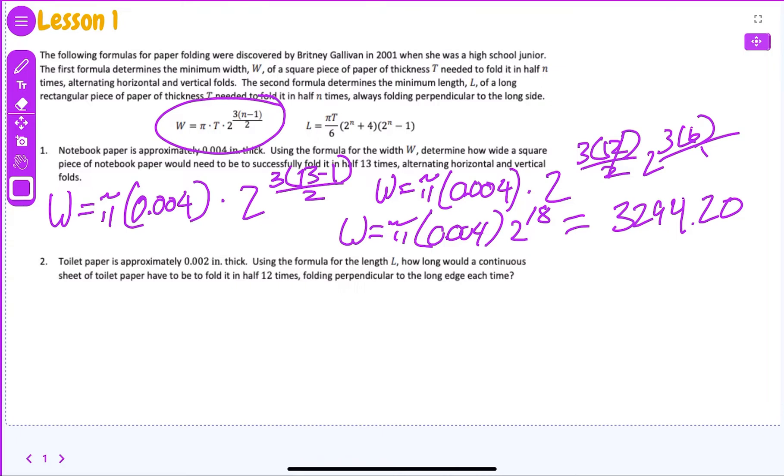Now number two says toilet paper is approximately 0.002 inches thick. Using the formula for the length L, how long would a continuous sheet of toilet paper have to be to fold in half 12 times, folding perpendicular along the long edge each time? So once again we're just plugging in stuff. I'm going to plug in for t, I'm going to plug in for n, and just solve it.